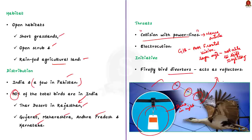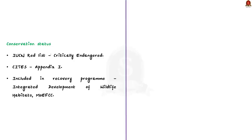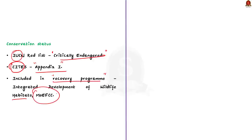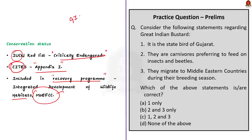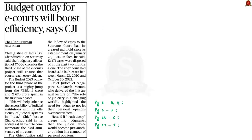Regarding conservation status, the Great Indian Bustard is categorized as Critically Endangered under the IUCN Red List of Threatened Species. They are also listed in Appendix 1 of CITES — the Convention on International Trade in Endangered Species of Wild Fauna and Flora. Additionally, the Great Indian Bustard has been identified as one of the species for the recovery program under the Integrated Development of Wildlife Habitats of the Ministry of Environment, Forests and Climate Change. This topic is very important for your prelims exam.